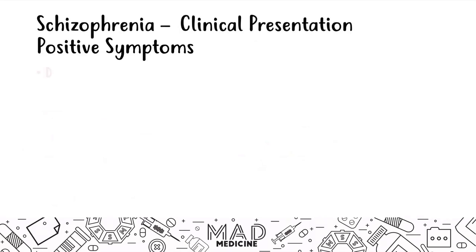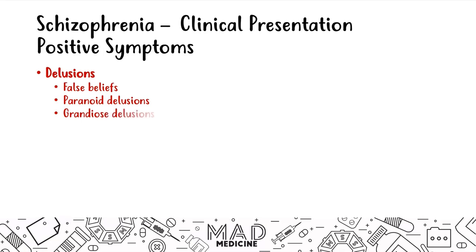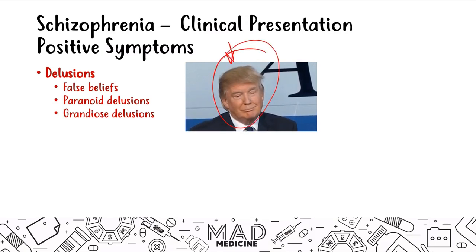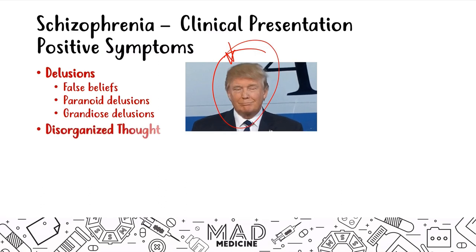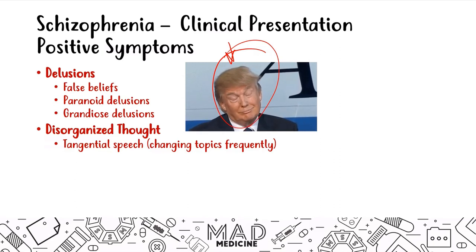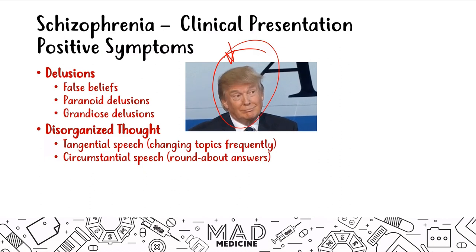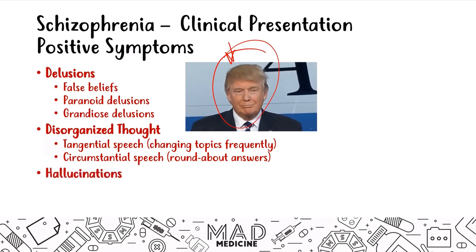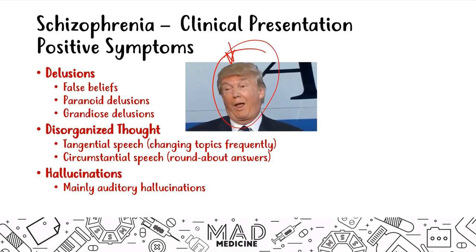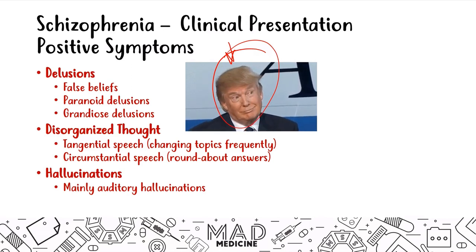When it comes to positive symptoms, you're going to have delusions, which are false beliefs. Patients might hold paranoid delusions or grandiose delusions. Patients may also show disorganized thought and speech — tangential speech where they change topics quickly, or circumstantial speech where they give roundabout answers. Finally, they'll have hallucinations. In schizophrenia, it's mainly auditory hallucinations rather than visual, although visual hallucinations can occur.